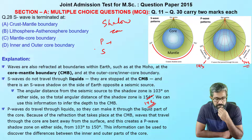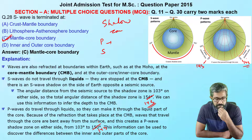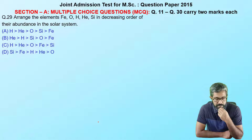The shadow zone exists because S-waves cannot travel through liquid. This tells us that the outer core is liquid and the inner core is solid. The boundary where this phenomenon is identified is the mantle-core boundary. So the answer is the mantle-core boundary. Remember: the shadow zone range is very commonly tested — also note that the P-wave shadow zone is approximately twice the S-wave shadow zone.